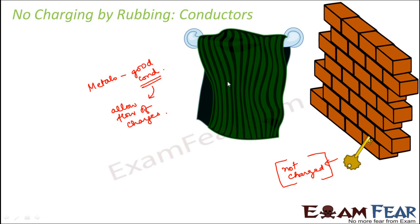In case of a conductor, since charges can flow through it, the excess charges disappear as they flow through the conductor. As a result there is a momentary current which passes to the earth through the conductor. So there is no excess charge present on the conductor. If an object has to be positively charged there must be excess positive charges; if negatively charged there must be excess electrons. Since charges just flow through, the conductor is not electrically charged. This is why we cannot charge conductors by rubbing.